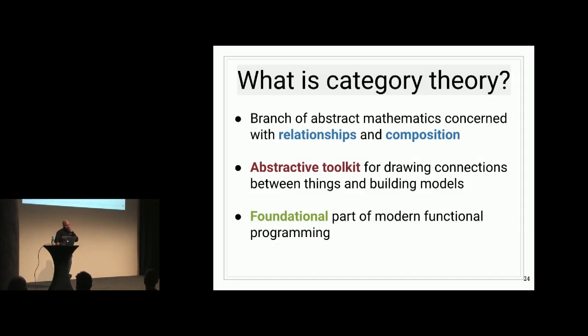So what is category theory? It's been introduced maybe a couple times in the conference so far, but it's just a branch of abstract mathematics concerned with relationships and composition. It has its origin in the 1940s where logicians and abstract algebraists were looking to find the similarities between different mathematical models. And ultimately, it's like the abstractive toolkit that mathematicians use. So why should we care in programming?